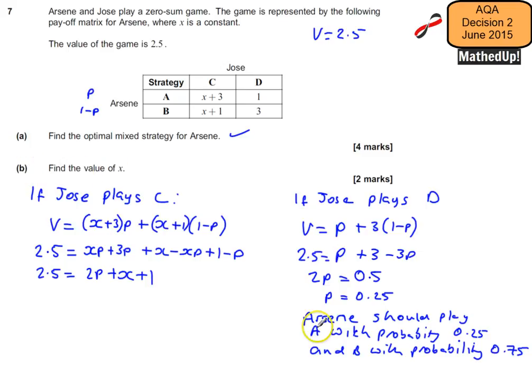Part B says find the value of x. Well, now we know that P is equal to 0.25, so I can come over here and say, because 2.5 is equal to 2P + x + 1, and we now know that P is equal to 0.25, therefore 2.5 is going to be equal to 2 times 0.25 plus x plus 1.